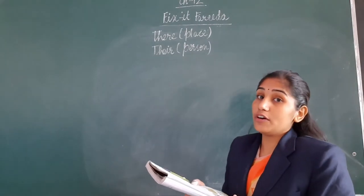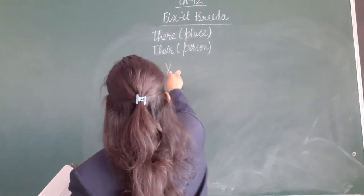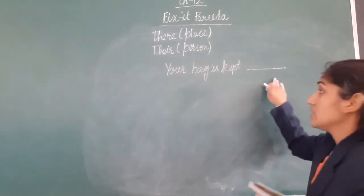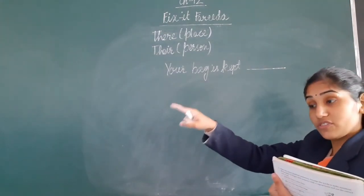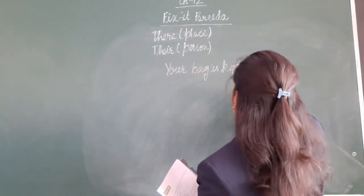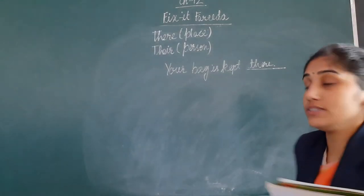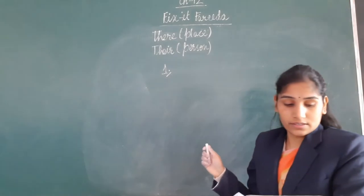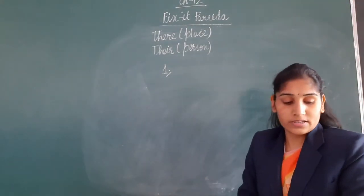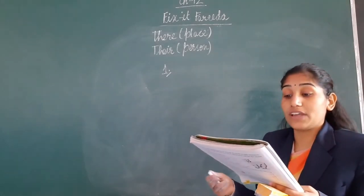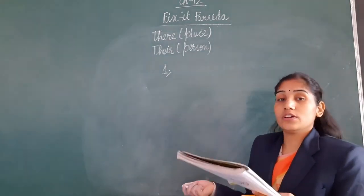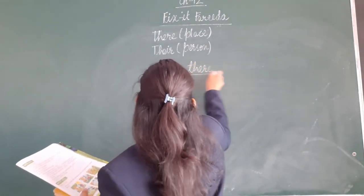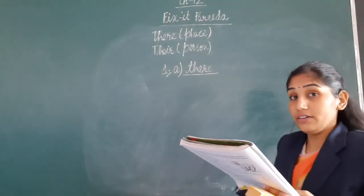For example, 'Your bag is kept there.' So here we are indicating a place, so we use T-H-E-R-E. Now let us look at some questions given in the book. We will begin with question number 1: Fill in the blanks with 'there' or 'their'. Part A: 'I have always wanted to go ___ in winters because of the snow.' Here they are talking about a place. So we will use T-H-E-R-E: there.